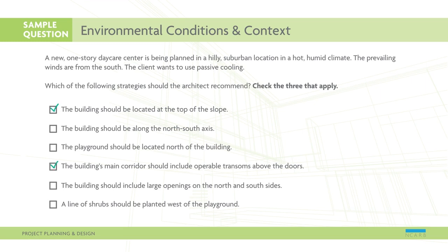Here are the correct responses. All of these strategies are discussed in Sun, Wind, and Light: Architectural Design Strategies. Buildings in a hot, humid climate should be located at the top of a slope to catch cooling breezes. Large openings on the north and south sides and operable transoms in the corridor will allow for cross ventilation.